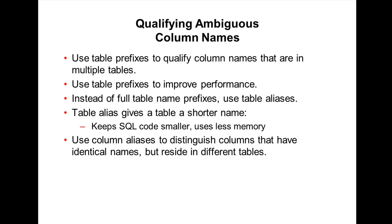Always use a table prefix to qualify column names that appear in multiple tables. For example, department ID exists in both the employees table and the departments table. You can give aliases to tables — like 'e' for employees and 'd' for departments. Using a table prefix or alias improves performance by avoiding a full table scan and uses less memory.